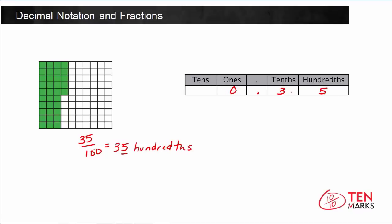So now as you can see, 35 hundredths is equivalent to 3 tenths and 5 hundredths. If you wrote this as fractions, 3 tenths would be 3 over 10, and then plus your 5 hundredths, which would be 5 over 100.